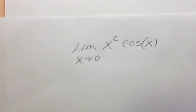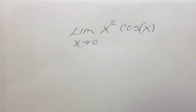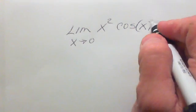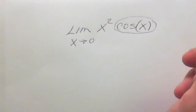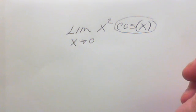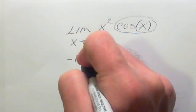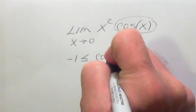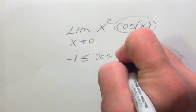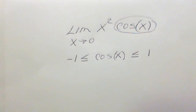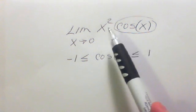The first example is a very easy limit. We're going to look at the limit of x squared times the cosine of x as x approaches zero. With a problem like this, the first thing you want to do is look at just the trig function itself. We know the range of the cosine of x will vary between negative one and one. So we write that down: cosine of x is greater than or equal to negative one and less than or equal to one.